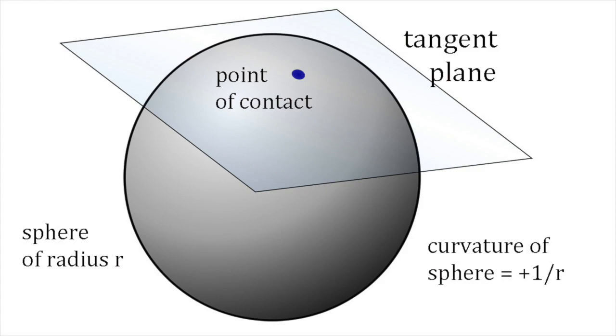In contrast, a surface has negative curvature at a point if the surface curves away from the tangent plane in two different directions.